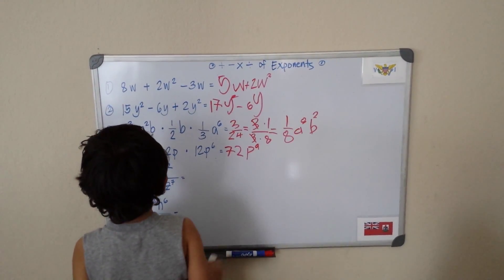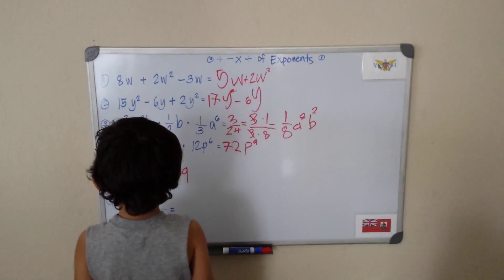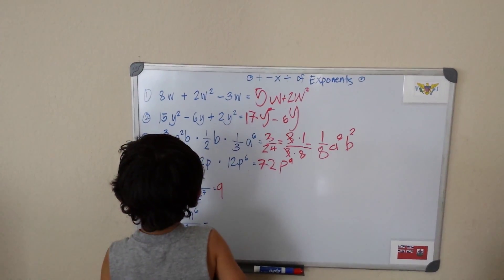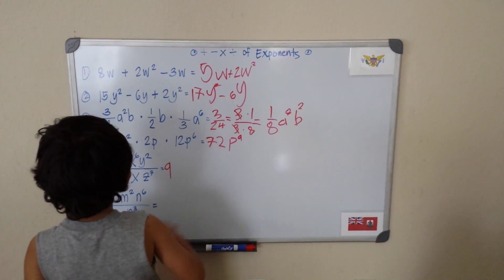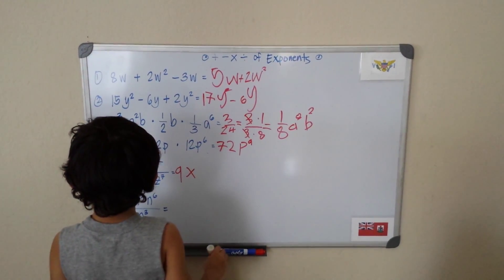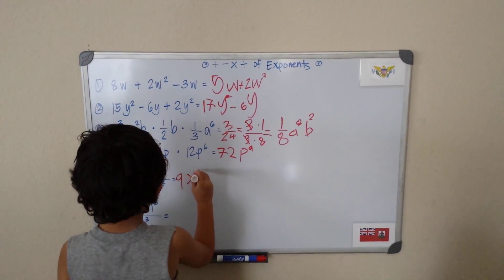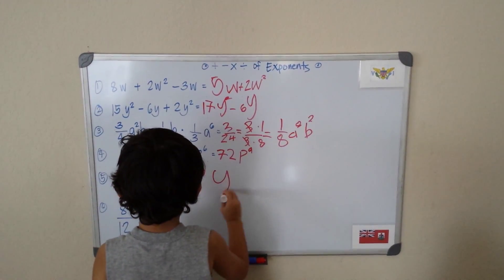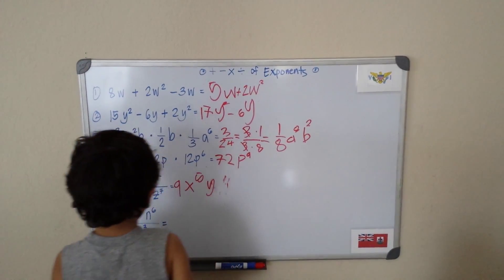We can just write 9 there. So we can move on to our X raised to the 6th power. Let's see. 6 minus 1 is 5, and Y.